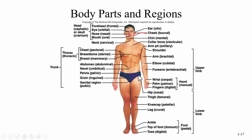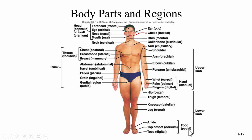The hip is coxal. The thigh is femoral, because we have the femur bone there. The kneecap area is patellar. The leg (shin area) is crural. The ankle is tarsal. The top of the foot is the dorsum, and toes are also digital. Another term for foot is pedal — like a bicycle pedal, but in anatomy we pronounce it 'pedal.'